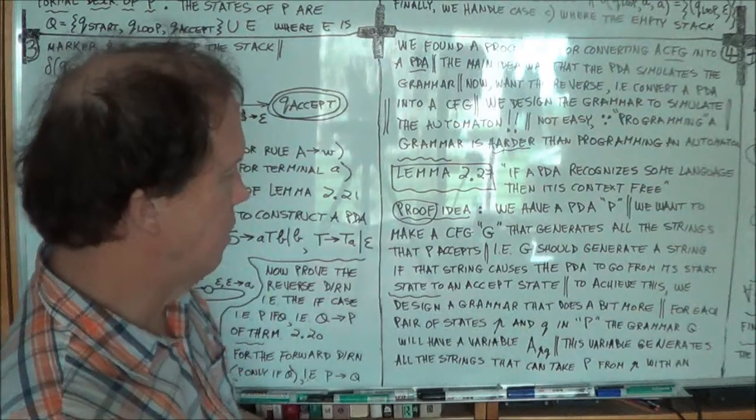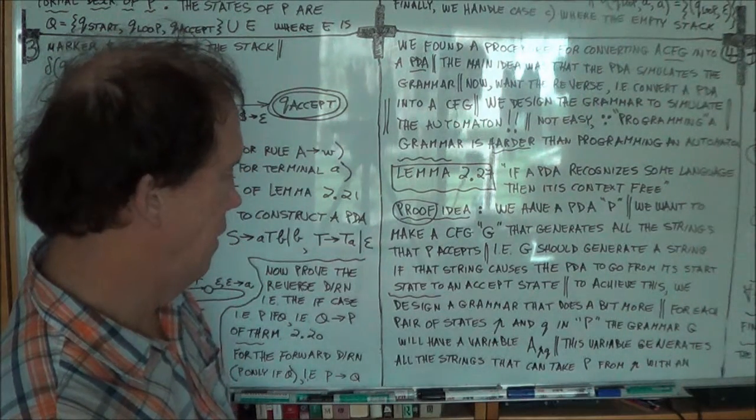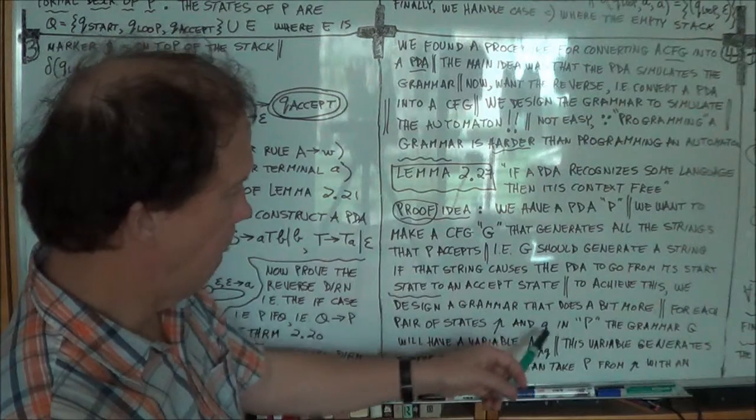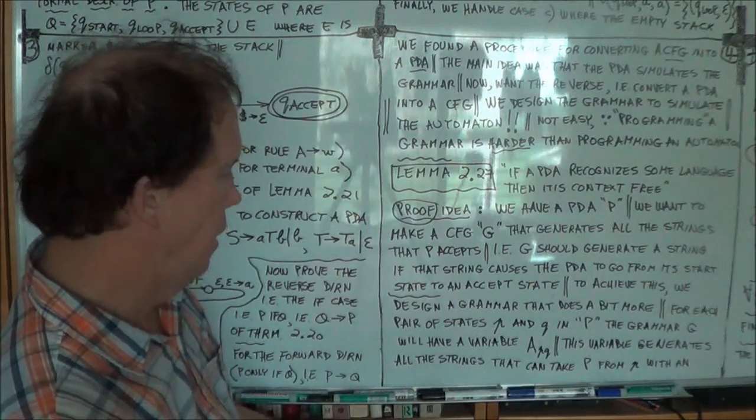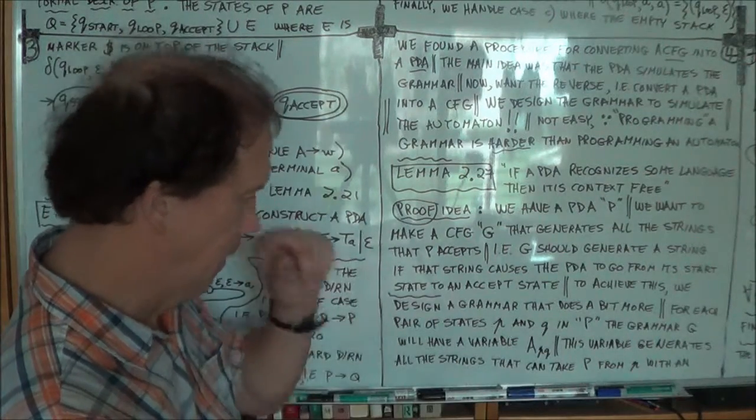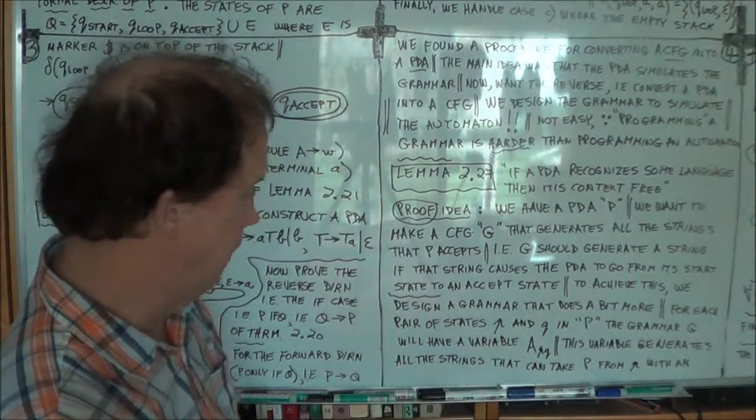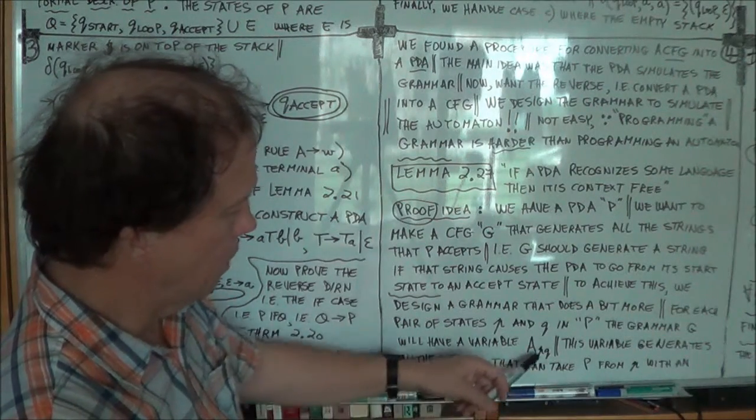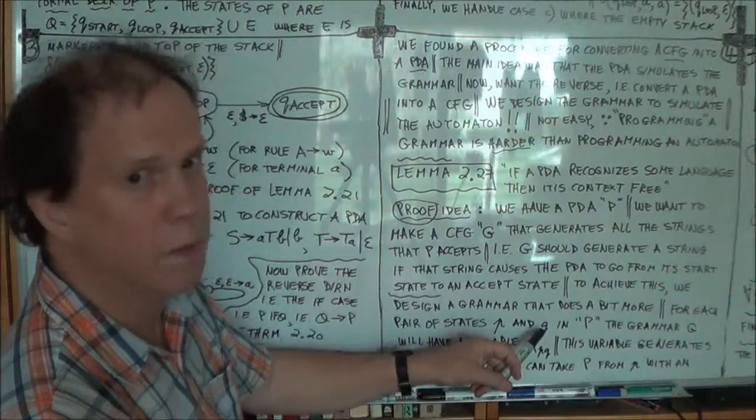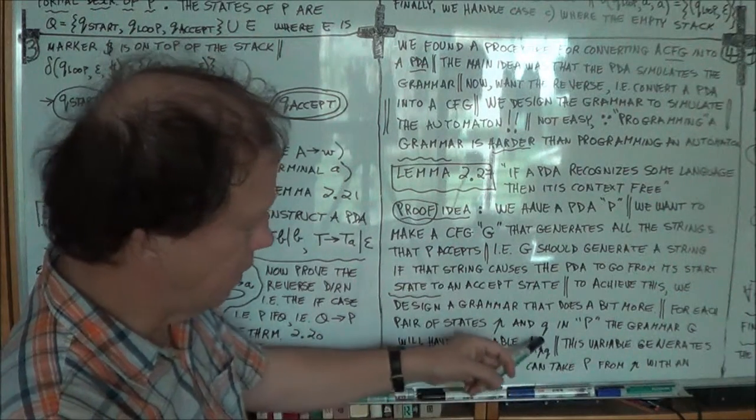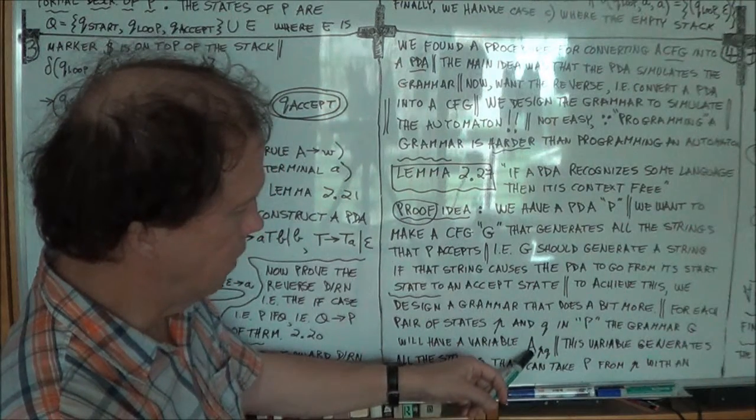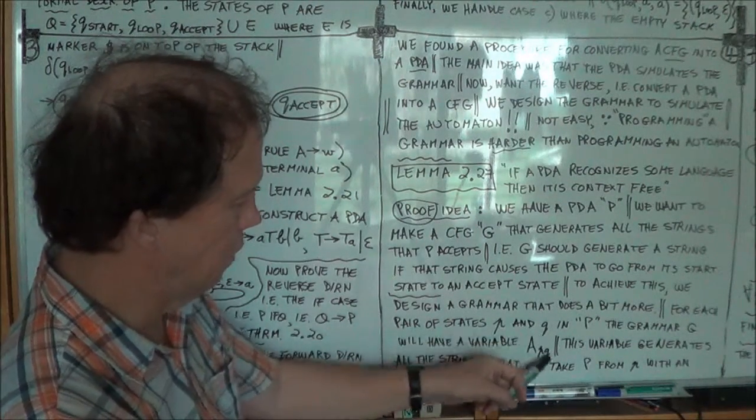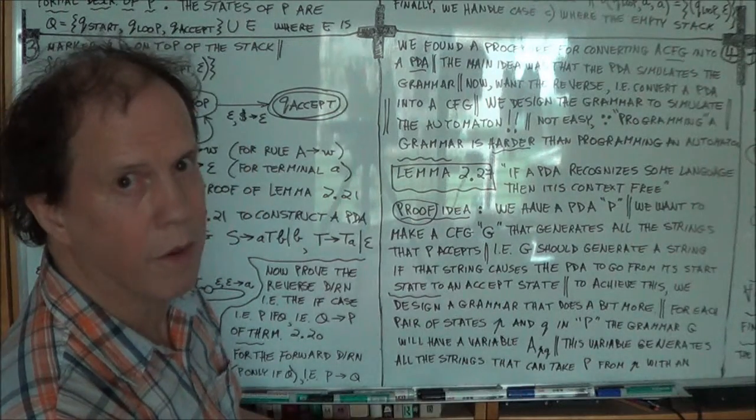Okay. Now, this grammar that we're going to create, it does a little bit more than just that, makes things easier for us. We're going to have, for each pair of states P and Q in the PDA, we're going to have a variable in the grammar. And we'll call that variable, you know, big A, capital A as usual, with suffix PQ. So for each pair of states in your machine, in your automaton, we're going to have a variable labeled big A suffix PQ. Right? So you have a different pair of P's and Q's. Well, you have correspondingly a different variable that'll go into your grammar.